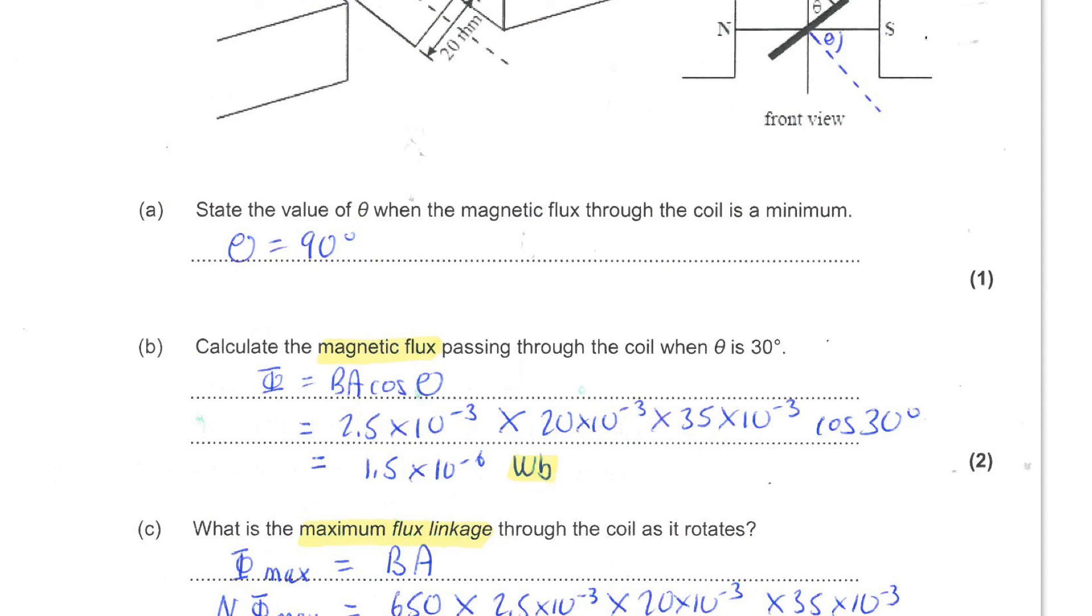That gives us an answer of 1.1 times 10 to the minus 3 and the units for flux linkage are Weber turns.